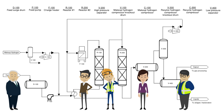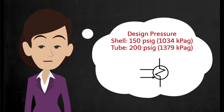Where does the product go after the feed oil and make-up hydrogen are combined? It looks like the feed goes through a heat exchanger. The shell side is designed to 150 PSIG or 1034 kPaG, and the tube side is designed to 200 PSIG or 1379 kPaG.